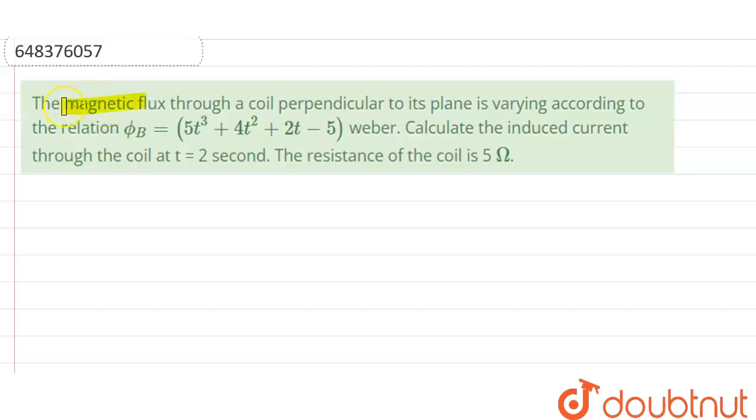Hello friends, our question is: the magnetic flux through a coil perpendicular to its plane is varying according to the relation φ = 5t³ + 4t² + 2t - 5 Weber. Calculate induced current through the coil at t = 2 seconds. The resistance of the coil is 5Ω.